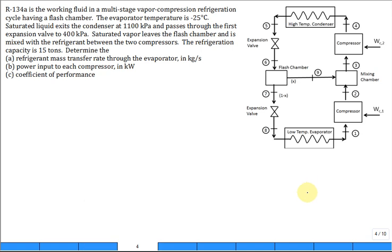We have refrigerant 134A as the working fluid in a multi-stage vapor compression refrigeration cycle having a flash chamber. The evaporator temperature is negative 25 degrees C. A saturated liquid exits the condenser at 1100 kPa and then passes through the first expansion valve and drops to 400 kPa.